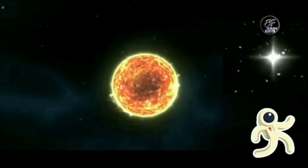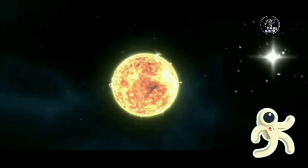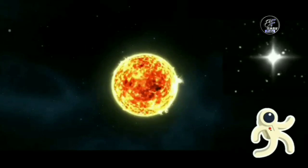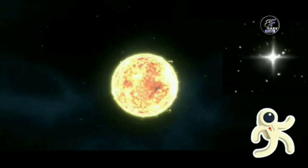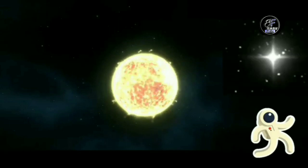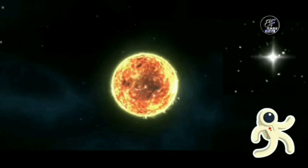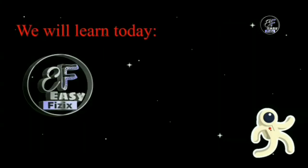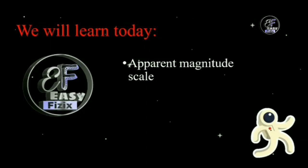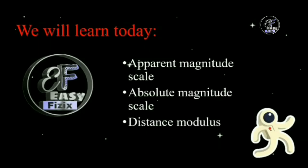In the previous video, we understood what apparent brightness and luminosity of a star are. Today we will see the Apparent Magnitude Scale, the Absolute Magnitude Scale, and the Distance Modulus.